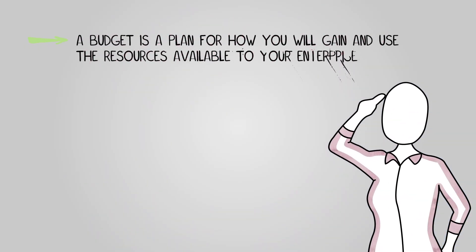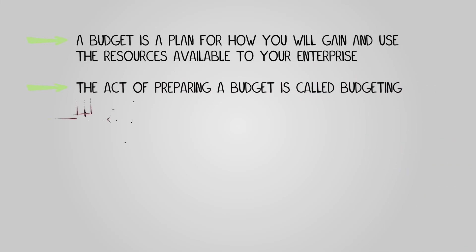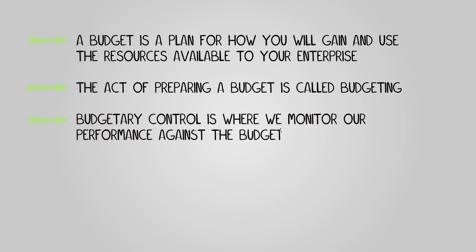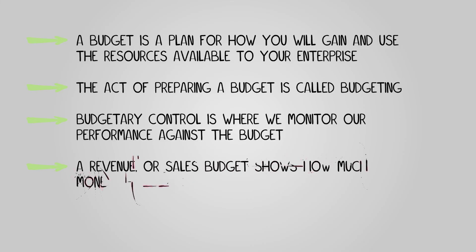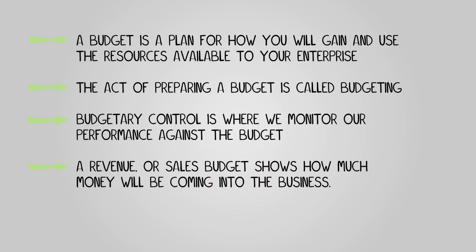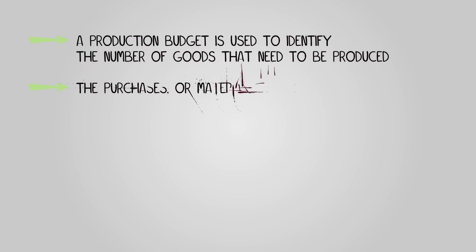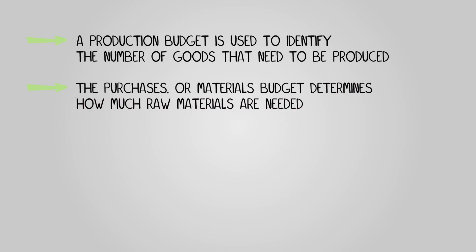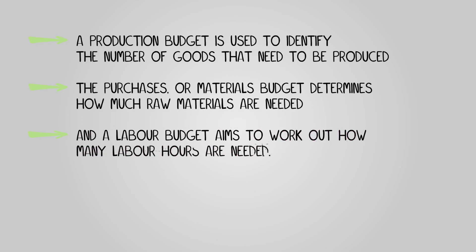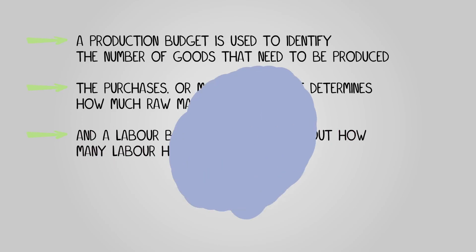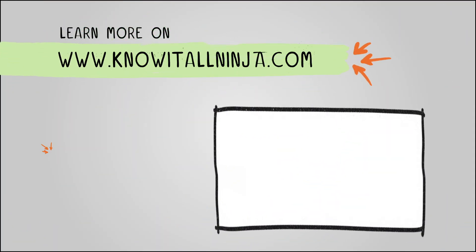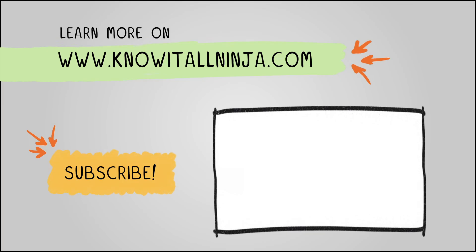In conclusion, a budget is a plan for how you will gain and use the resources available to your enterprise. The act of preparing a budget is called budgeting, and budgetary control is where we monitor our performance against the budget. A revenue or sales budget shows how much money will be coming into the business. A production budget identifies the number of goods that need to be produced. The purchases or materials budget determines how much raw material is needed, and a labor budget aims to work out how many labor hours are needed.